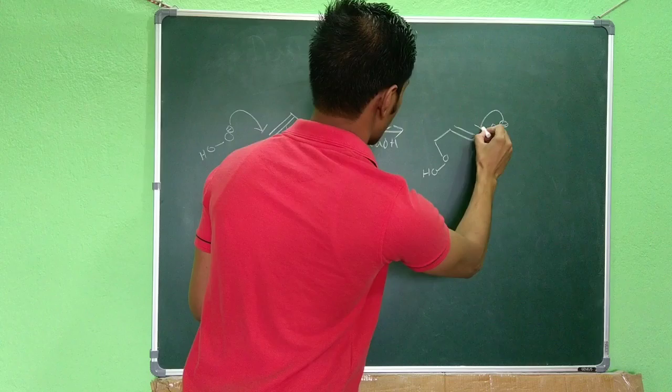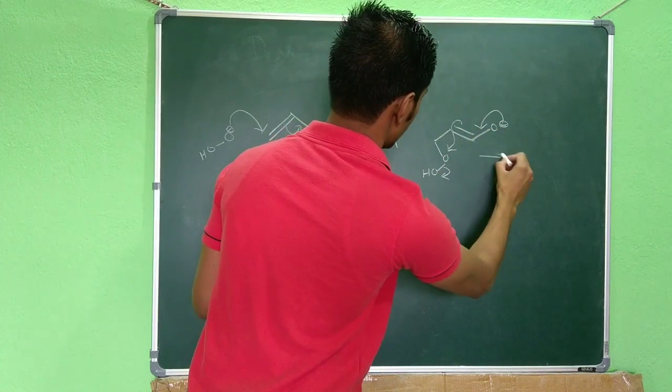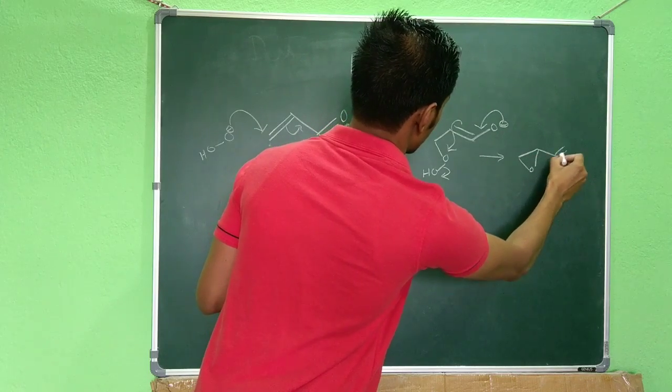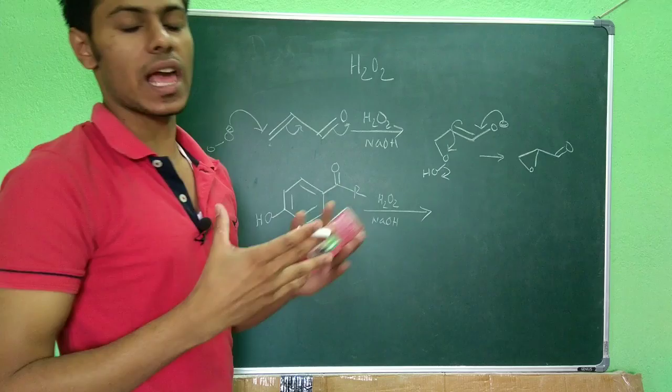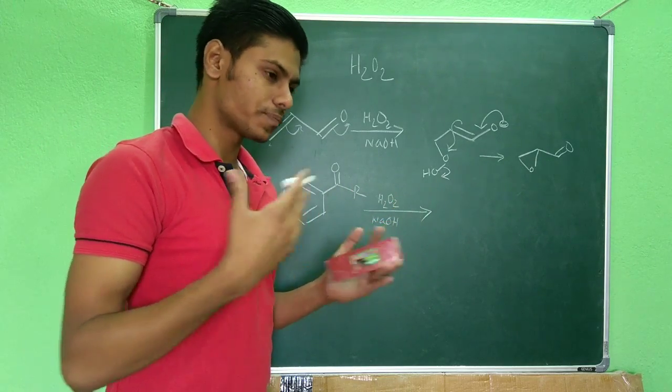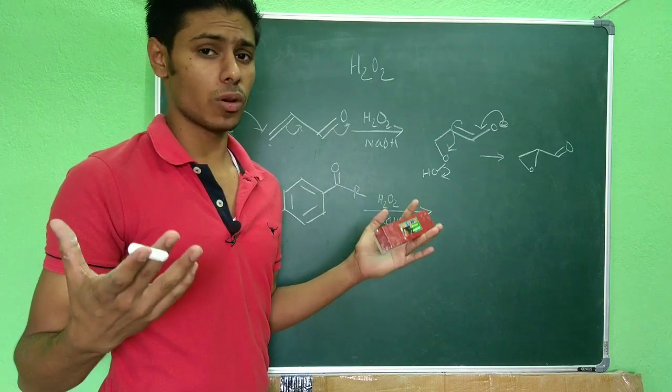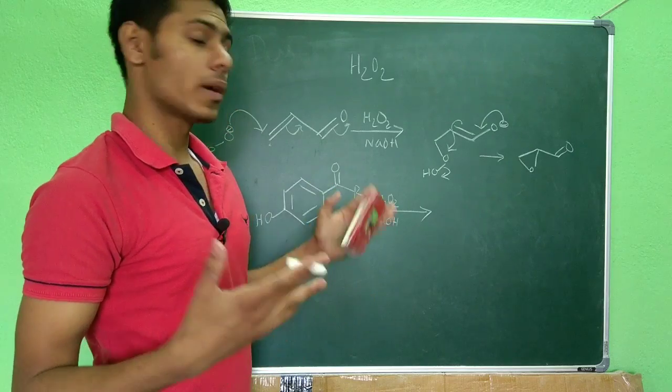Now when this minus comes back, it will attack here, this OOH will go, and you will get this. So for electron rich alkene we use metachloroparbenzoic acid for epoxidation, which is the electrophilic epoxidation, and I have made a video on metachloroparbenzoic acid you can watch it.